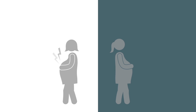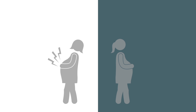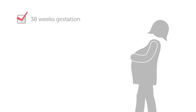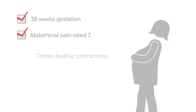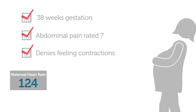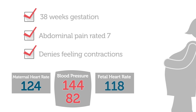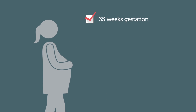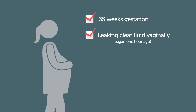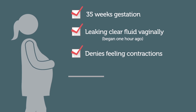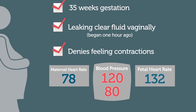Let's look at an example of how the MFTI can be applied. Two women present to your OB unit. The first woman is 38 weeks gestation and rates her constant upper abdominal pain as a 7 on a 10-point scale. She denies feeling contractions. Her heart rate is 124 beats per minute and blood pressure is 144 over 82. The fetal heart rate is 118 beats per minute. The second woman is 35 weeks gestation and reports leaking clear fluid vaginally that began one hour ago. She denies feeling contractions and her vital signs and fetal heart rate are within normal limits.